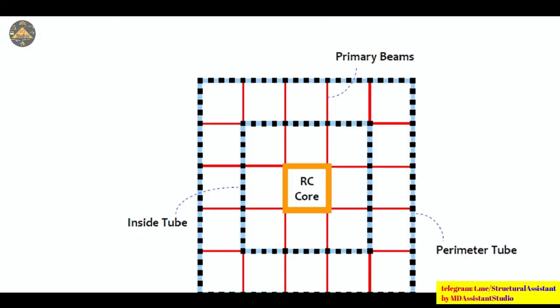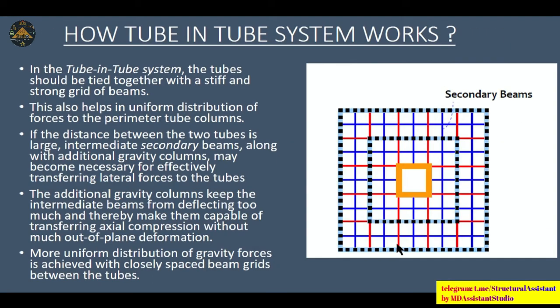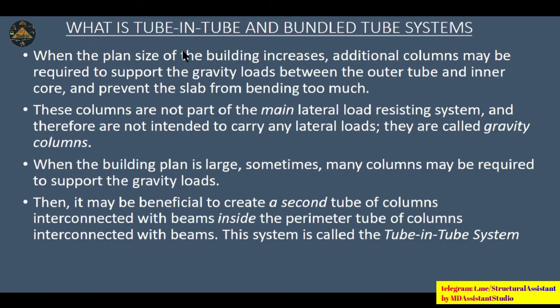The tube-in-tube system consists of an outer tube, an inner tube, and an RCC core. The bundle tube system consists of multiple outer tubes, RCC structural wall tubes, and additional columns tied together — this arrangement is best suited for very high-rise buildings. When the plan size of a building increases, additional columns may be required to support gravity loads between the outer tube and inner core; these columns are not part of the lateral load resisting system.